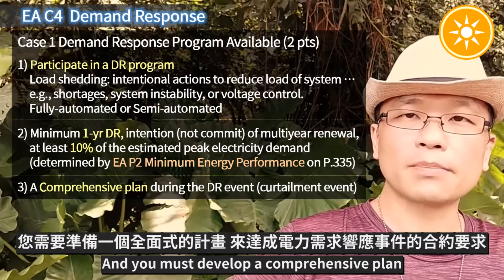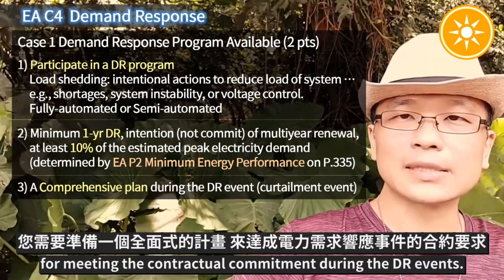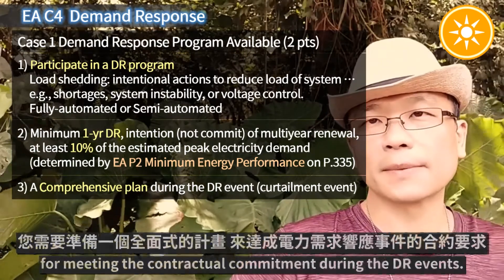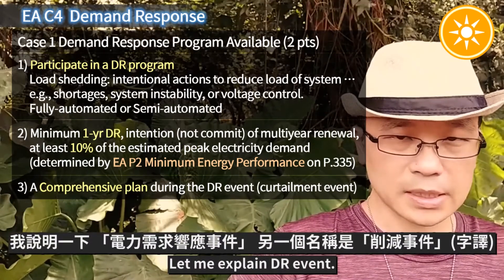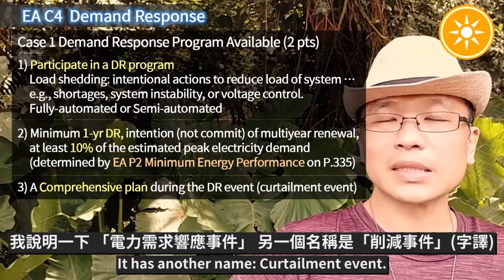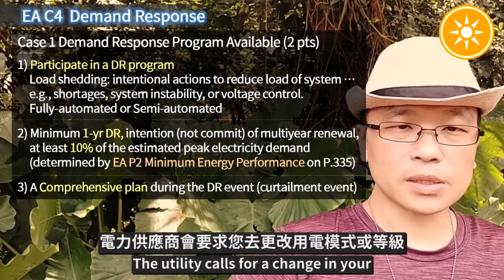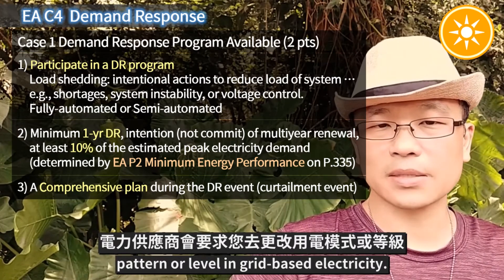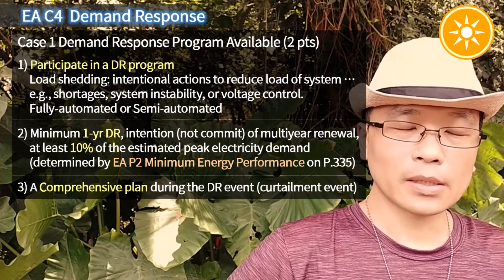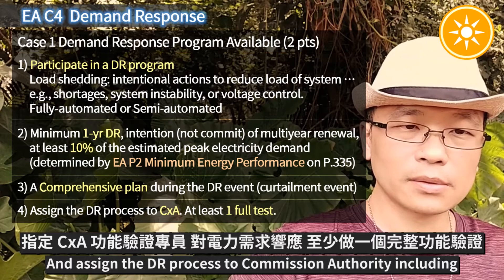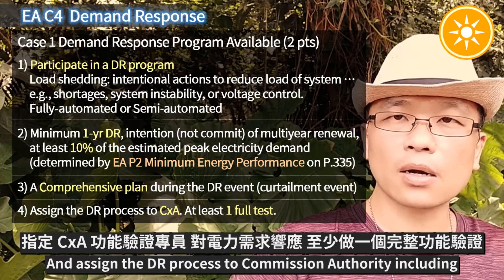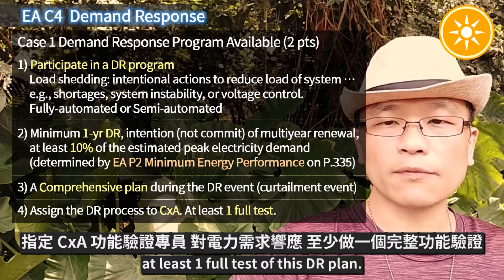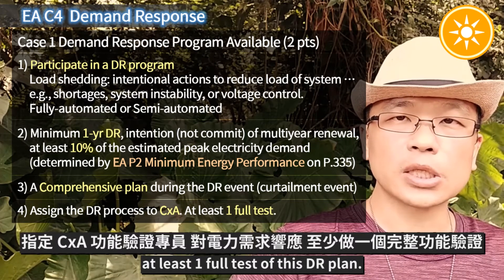You must develop a comprehensive plan for meeting the contractual commitment during a DR event. A DR event — also called Prerequisite to Minimal Energy Performance — is when the utility calls for a change in your pattern or level of grid-based electricity. You must also assign the DR process to the commissioning authority, including at least one full test of the DR plan.